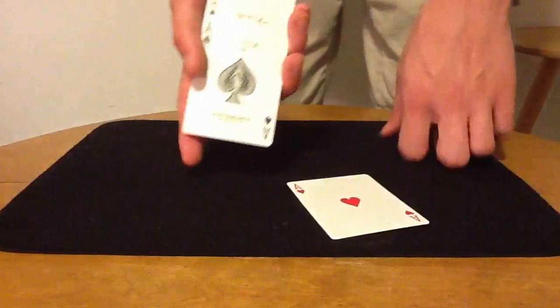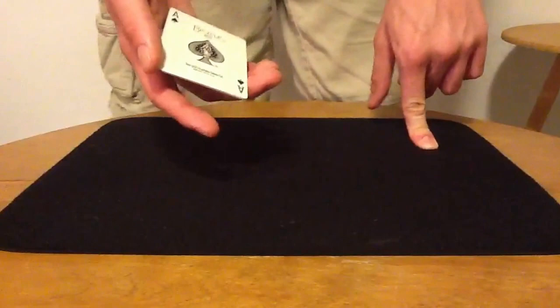One is still face down, which is, of course, the missing ace of hearts. Now having three aces of spades in any card game would definitely get you in trouble, so we'll get rid of one of those just for safety.